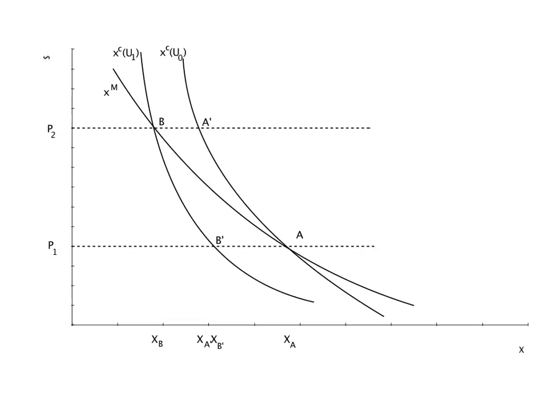This includes the impact of the price change starting from the original level of utility and the impact of reversing the price change from the perspective of the lower level of utility. Since the area under the Marshallian demand curve falls in between these measures, it seems reasonable to use this area as our standard measure of consumer surplus.